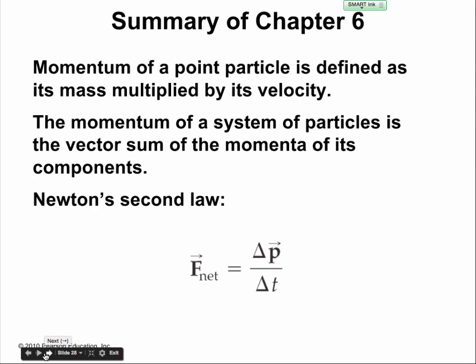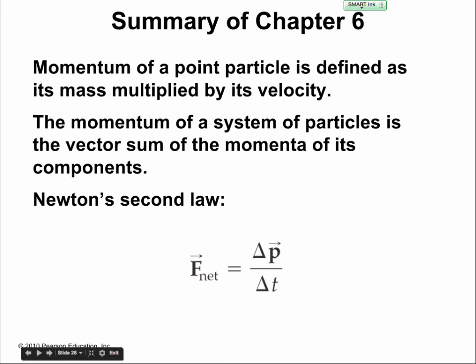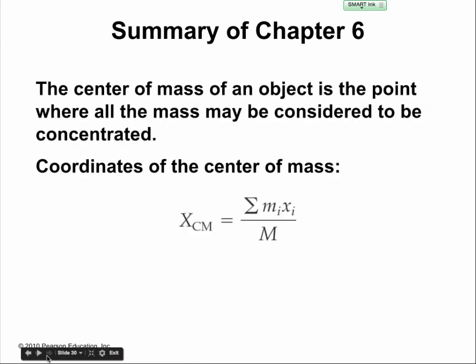In summary: the change in momentum over the change in time equals the net force, and we can manipulate those variables to make predictions about objects in motion. Impulse is the change in momentum, or the average force times the change in time. The center of mass can be calculated by taking all the parts of mass times their distances from a reference point, divided by the total mass, giving the x-location of the center of mass.